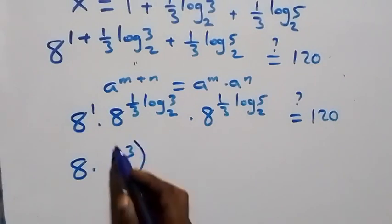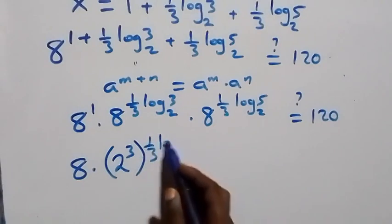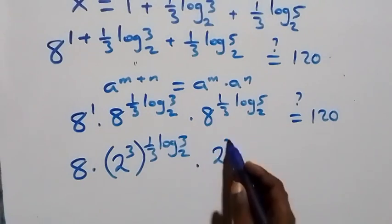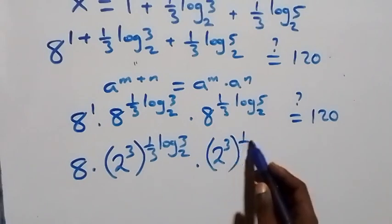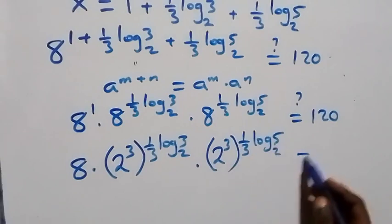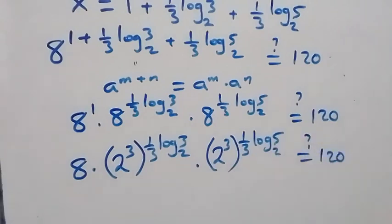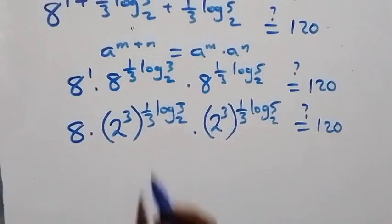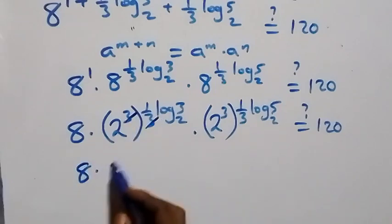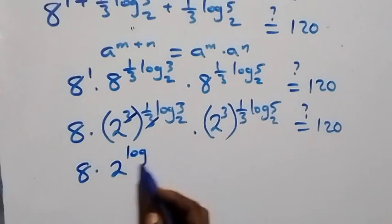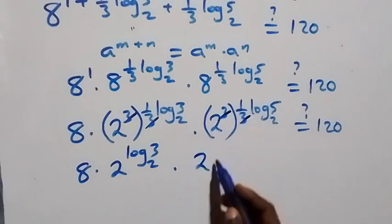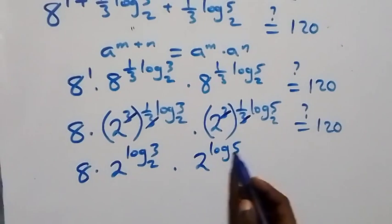We change 8 to 2 raised to power 3, then raise it to power (1/3)·log₂3, and also raise 2³ to power (1/3)·log₂5. The 3's cancel, leaving 2 raised to power log₂3 times 2 raised to power log₂5.